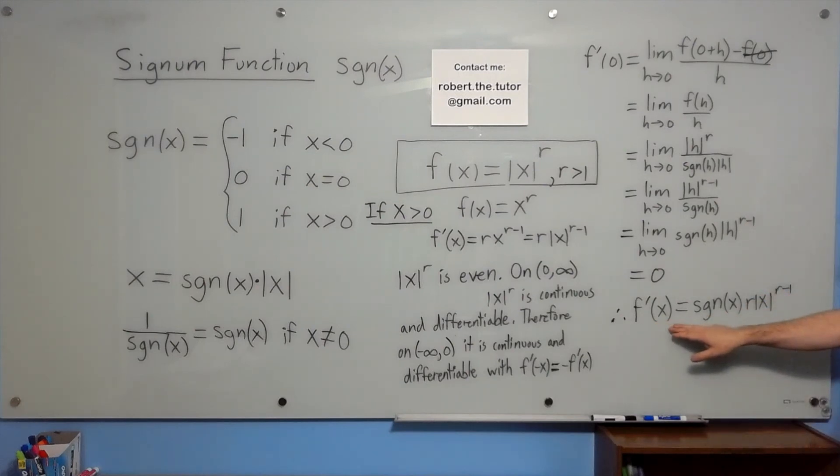The derivative of this function is signum x times r times absolute value of x to the r minus one.